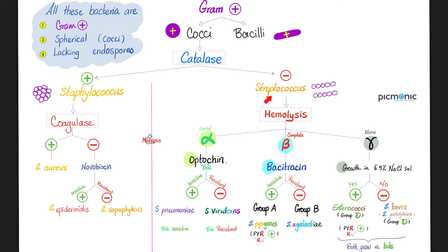What if I'm catalase negative? You are Streptococcus. Then the next question is: are you alpha hemolytic, beta hemolytic, or gamma hemolytic — meaning no hemolysis? If you're alpha hemolytic, the next question is optochin sensitivity. If you're optochin sensitive, you're Streptococcus pneumoniae. If you're optochin resistant, you are Streptococcus viridans. Optochin and bile will kill Streptococcus pneumoniae — that's why it cannot live in your gut — but optochin and bile cannot kill Streptococcus viridans.